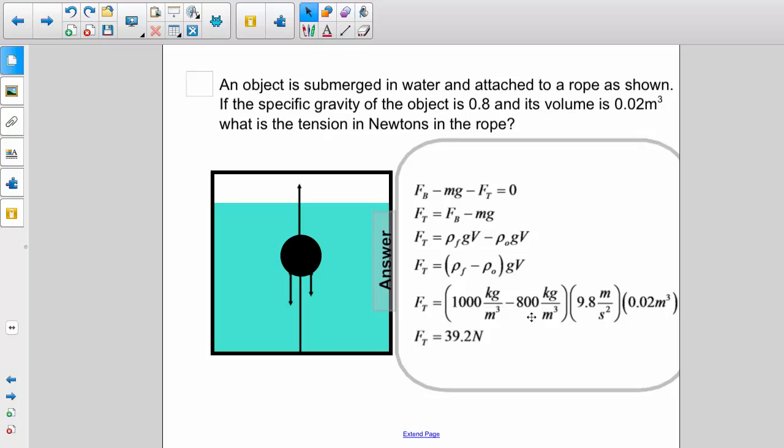But we know the specific gravity of the object is 0.8. Therefore, its density must be 0.8 times 1,000 kilograms per meter cubed, or 800 kilograms per meter cubed. Substituting for g and the volume, 0.02 meters cubed, we'll work the product out to find a tension of 39.2 newtons.